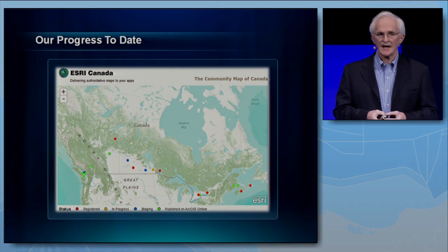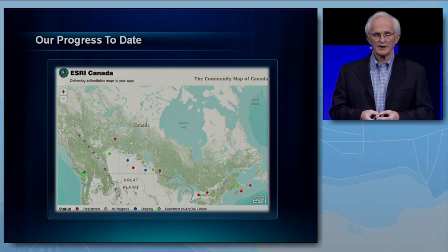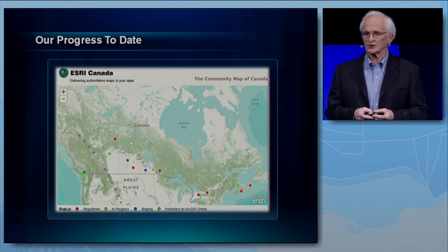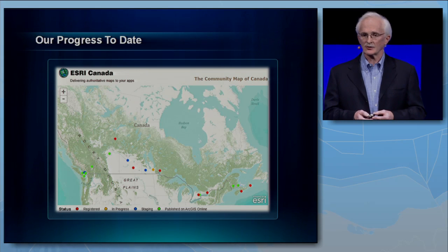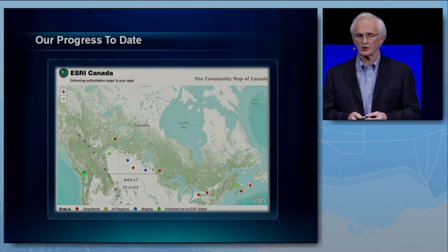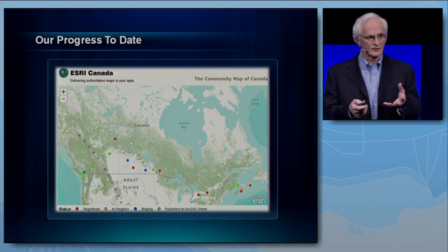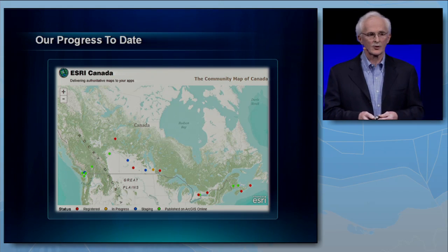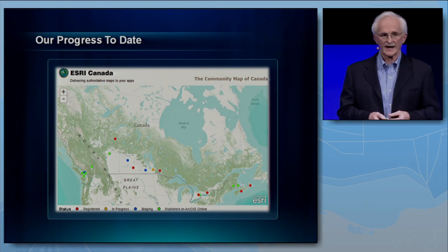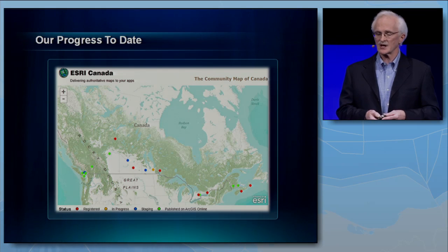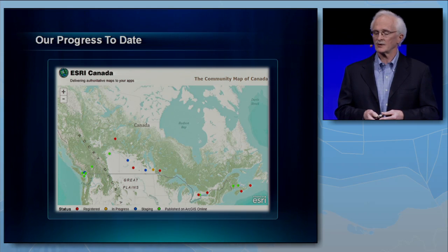About last May we approached the City of Toronto, Canada's largest city, to be the first city in Canada to provide data at the 1 to 10,000 down to 1 to 1,000 scale. They agreed and within about two weeks of getting their data we were able to put that into the template for the large-scale community map and delivered it for inclusion in the world topographic map just before the user conference in San Diego last year. Immediately after that, several other municipalities joined and in the last eight months over 35 communities have contributed their data or are working with us on licensing terms to become part of the community mapping program.